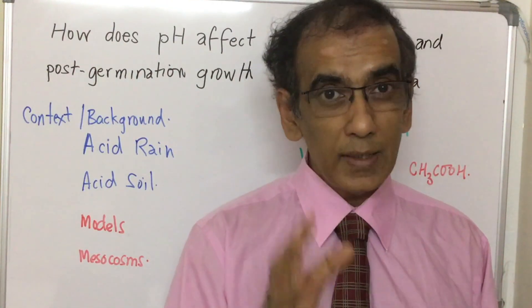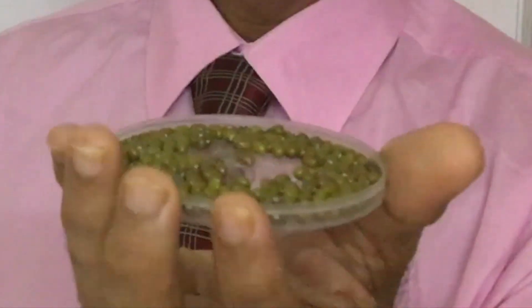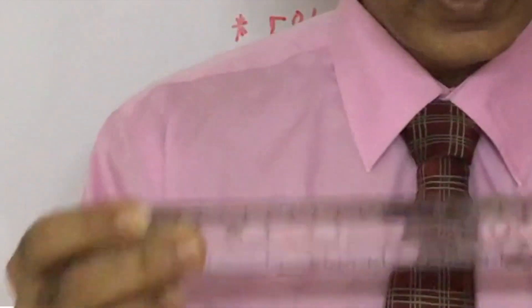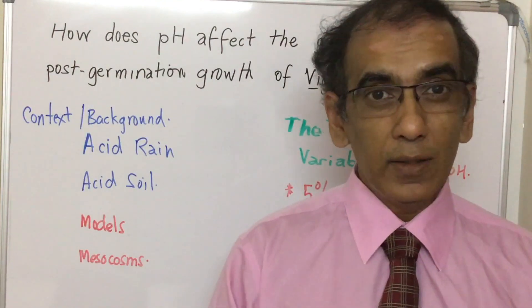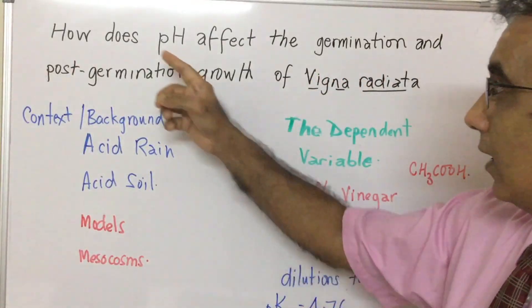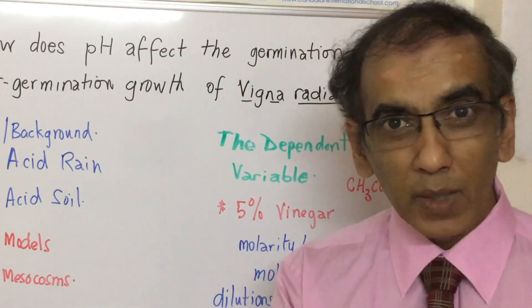The only materials students will need for this activity are a small bottle of vinegar, about 50 seeds of mung beans (Vigna Radiata), a ruler, and any kind of plastic container of uniform size — at least five of them — sealed with a few paper towels. All of that to answer this research question: how does pH affect the germination and post-germination growth of Vigna Radiata, the mung bean?